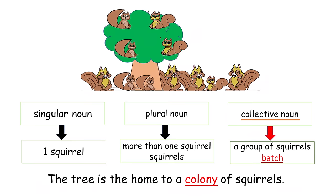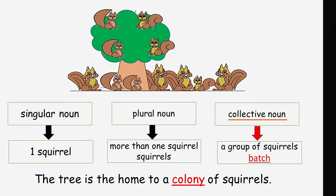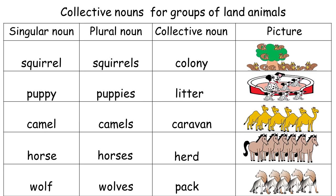Now we're going to have kids work with collective nouns for groups of land animals. The collective noun for a group of squirrels is colony, for puppies is litter, for camels is caravan, for horses is herd, and for wolves is pack.